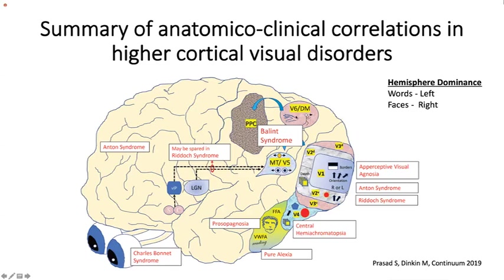Subcortical connections thought to be spared may underlie the Riddoch syndrome phenomenon. For hemisphere dominance: the left hemisphere is dominant for words, while the right hemisphere is dominant for facial recognition, although typical prosopagnosia cases occur after bilateral lesions.